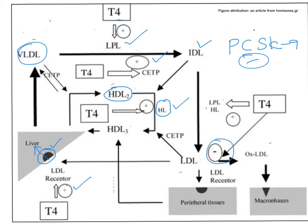Increased levels of T3/T4 also enhance prevention of LDL oxidation — LDL oxidation is completely prevented. LDLs are taken up into hepatocytes and peripheral cells while oxidation is simultaneously prevented, meaning atherogenesis is inhibited. So in terms of lipid metabolism, hyperthyroidism keeps cholesterol levels low, triglyceride levels low, and actually prevents atherosclerosis in hyperthyroid patients.